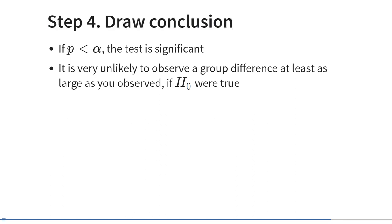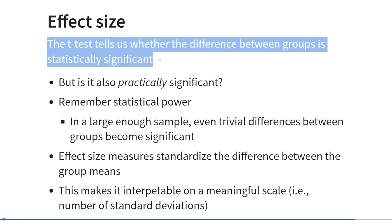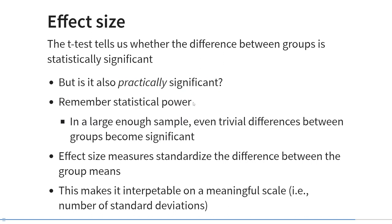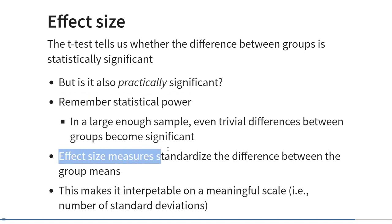The final step is to draw a conclusion. If your p-value is smaller than the alpha or significance level, you conclude that the test is significant — meaning it's very unlikely to observe a group difference at least as large as observed if the null hypothesis were true. The effect size tells us something about how large the difference between the two groups is in meaningful units. Significance tells us whether the difference is statistically significant, but not whether it's relevant or practically significant. With a large enough sample — say 100,000 people — even trivial differences between groups become statistically significant.